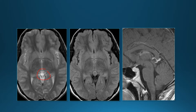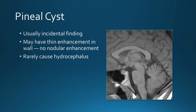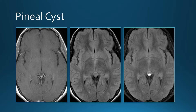Lesion in the pineal region — on post-contrast there's no solid enhancement, just vessels or maybe linear enhancement along the edge. We're talking about a pineal cyst. Usually these are incidental findings. They can have thin enhancement in the wall but no nodular enhancement. On post-contrast FLAIR you can see enhancement within the cyst because contrast leaks into the fluid — the pineal gland does not have a blood-brain barrier, so contrast can leak into the fluid.